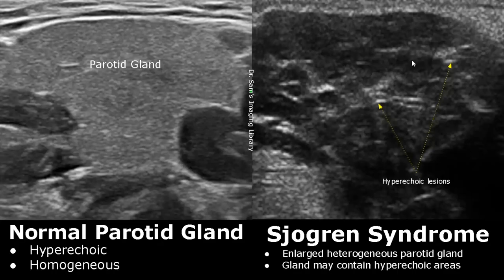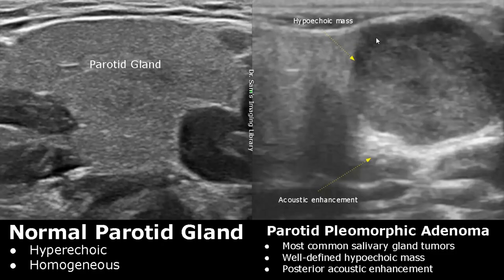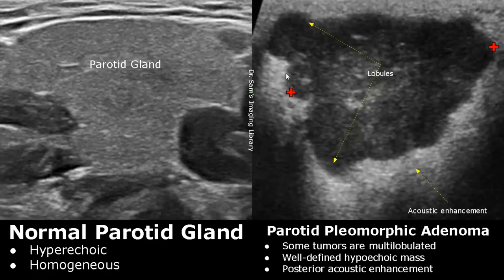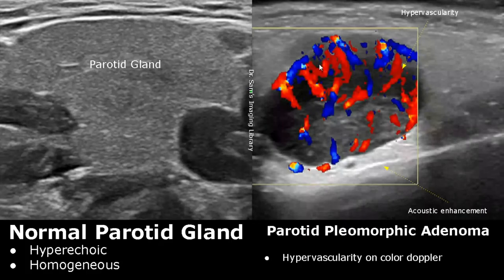Now we move on to salivary gland tumors. Parotid pleomorphic adenoma is the most common salivary gland tumor. We will find a well-defined hypoechoic mass with posterior acoustic enhancement. In some cases, this adenoma may also have multiple lobules or chambers, along with posterior acoustic enhancement. The mass will be hypervascular on color Doppler, with many Doppler signals found within it.